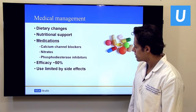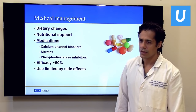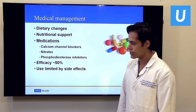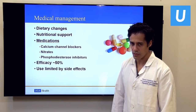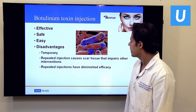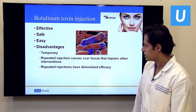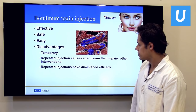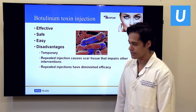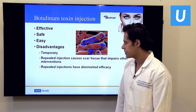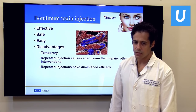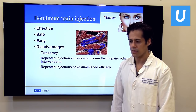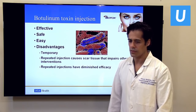Medical management is usually not very effective. Medications work about half the time but generally have intolerable side effects, limiting their use. These are medications whose side effect is relaxation of smooth muscle, used occasionally but not often. Botulinum toxin (Botox) is a protein that paralyzes muscle — familiar from cosmetic use — and is injected into the lower esophageal sphincter to allow it to relax. It's effective, safe, and easy to do as an outpatient procedure, but the problem is that it's temporary.